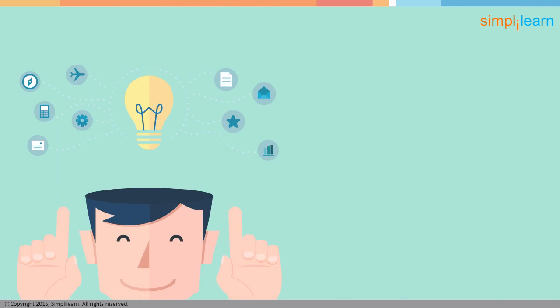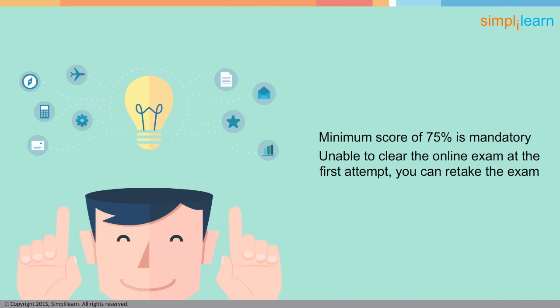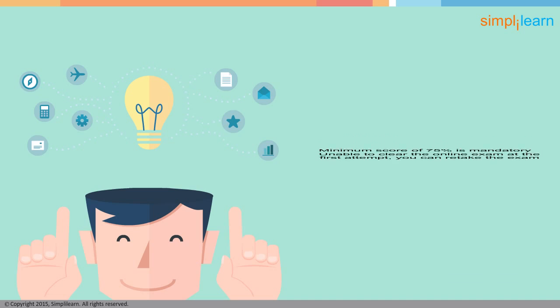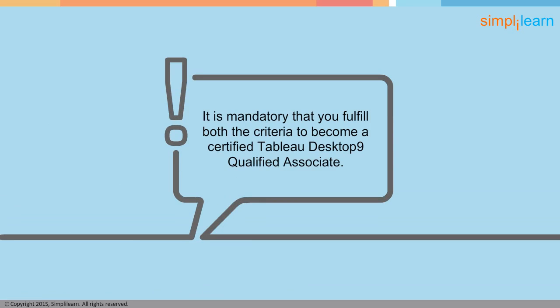A minimum score of 75% is mandatory for clearing the online examination. If you are not able to clear the online exam at the first attempt, you can take the exam once more. Note, it is mandatory that you fulfill both the criteria to become a certified Tableau Desktop 9 Qualified Associate.